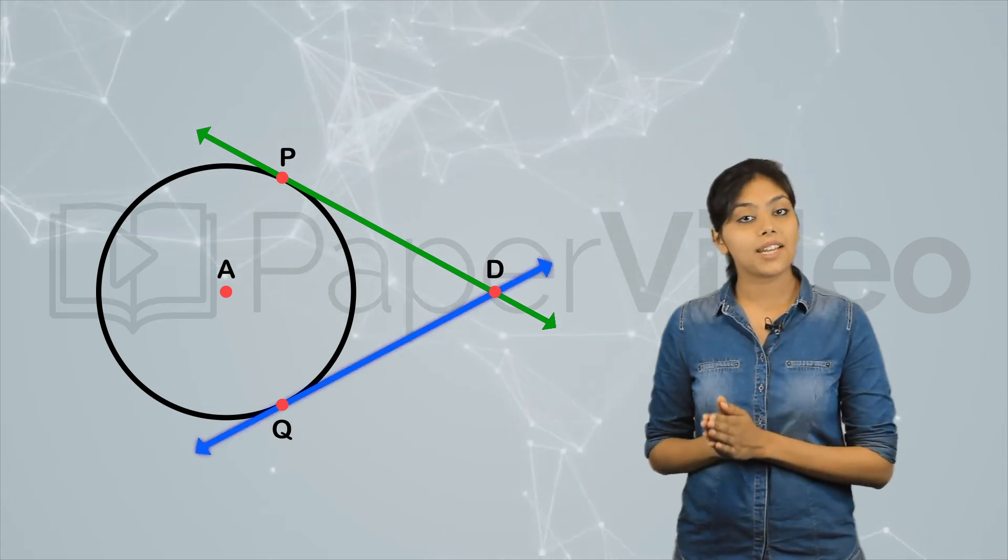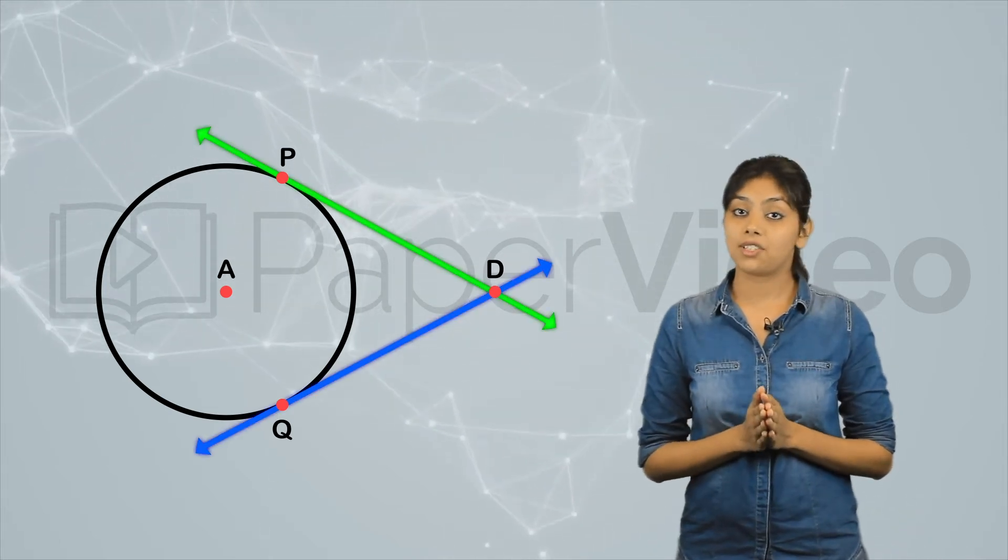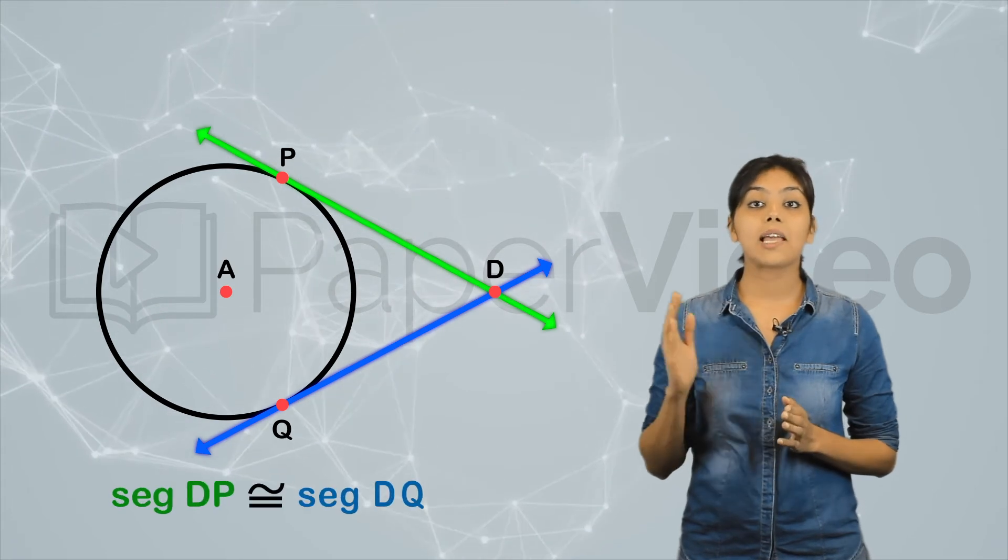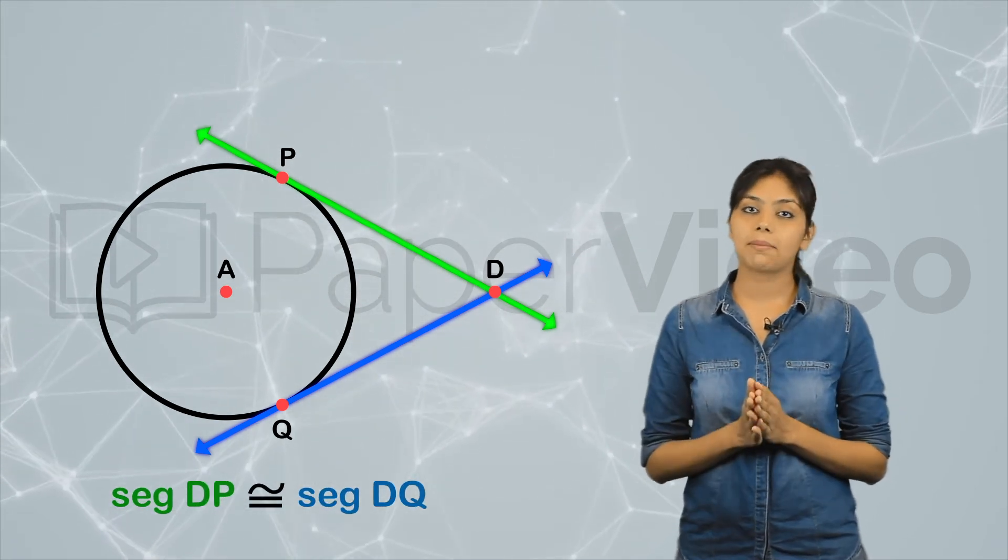This means that if DP and DQ are tangent segments to a circle, then segment DP is congruent to segment DQ.